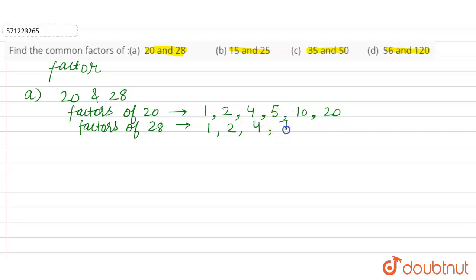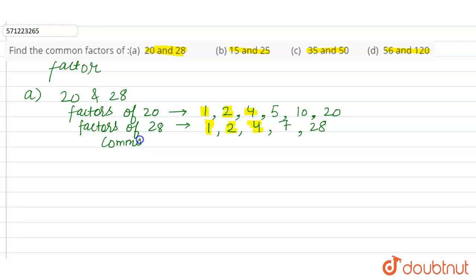...then 7 × 4 = 28, and 28 itself. So the factors of 28 are 1, 2, 4, 7, and 28. Now checking for common factors of 20 and 28: 1 is common, 2 is common, 4 is common. So the common factors of 20 and 28 are 1, 2, and 4.